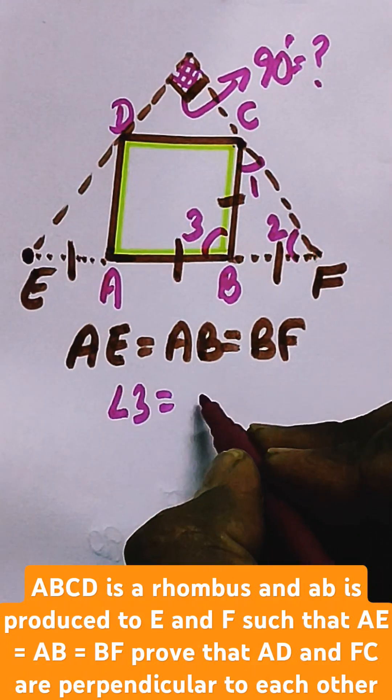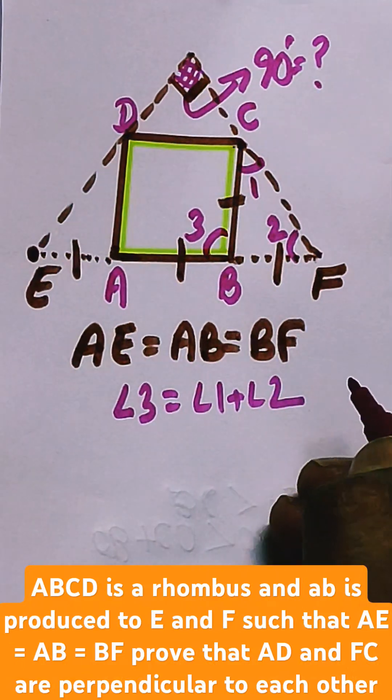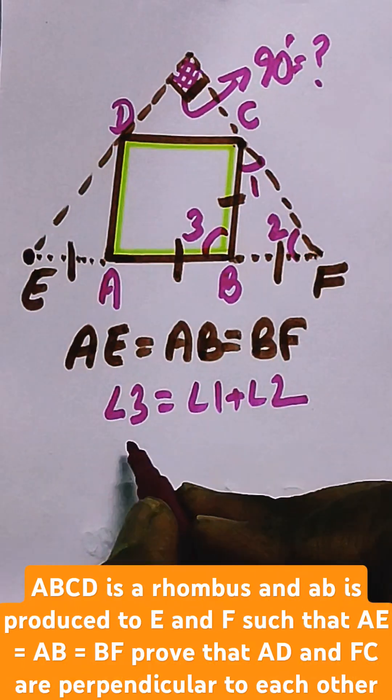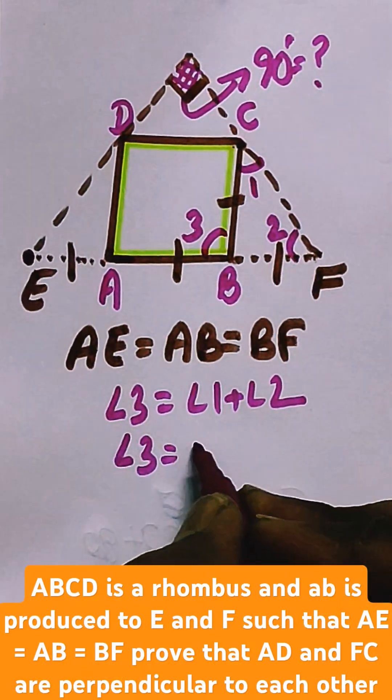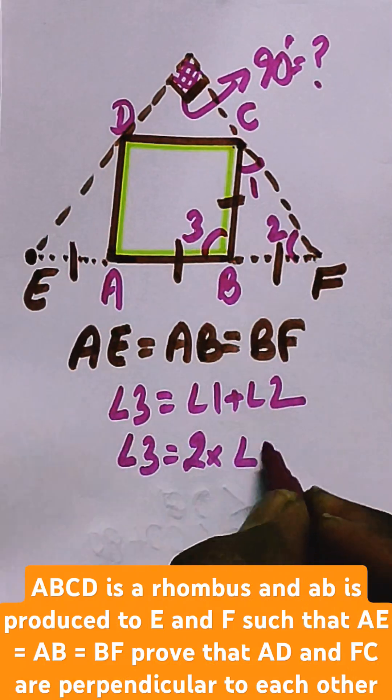Angle 3 equals angle 1 plus angle 2. And since 1 equals 2, we can write angle 3 equals 2 times angle 1.